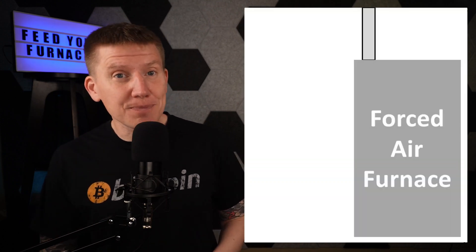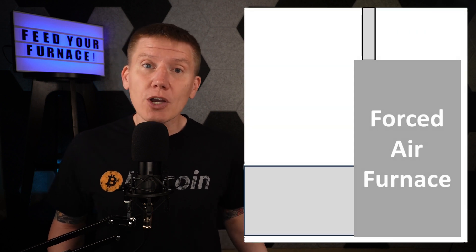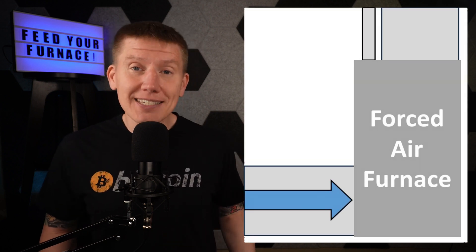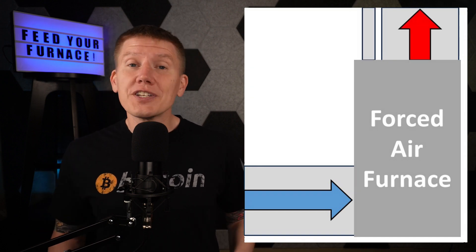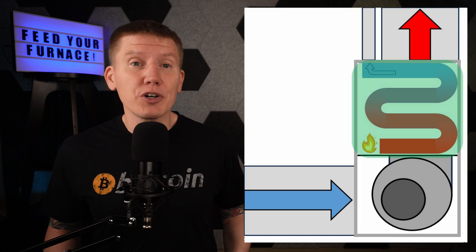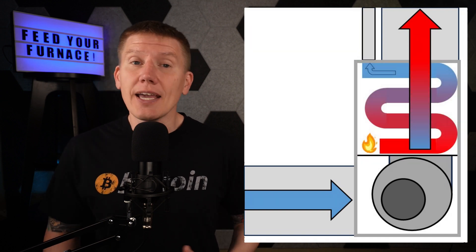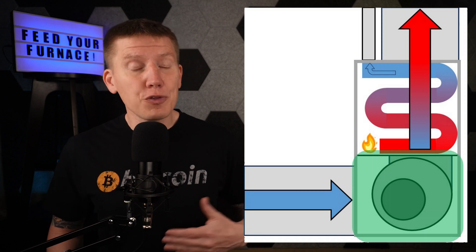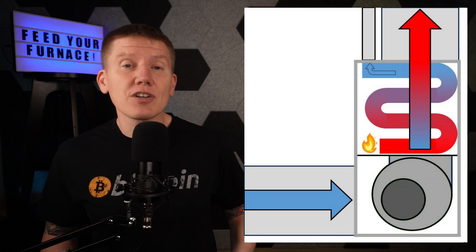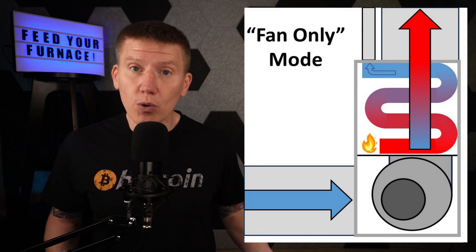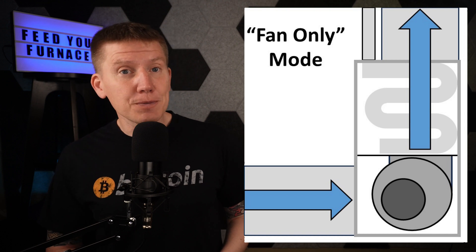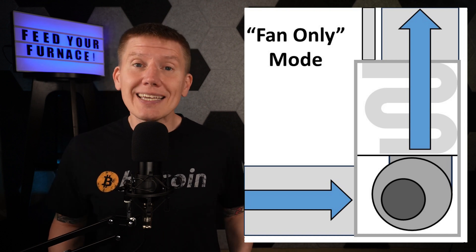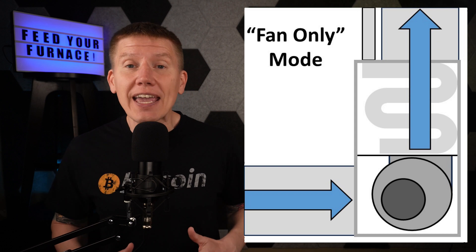For this setup, we'll start with an existing forced air furnace. This type of furnace has a return side plenum where the cold air enters the furnace and a supply side plenum where the heated air exits and flows to your house. The furnace consists of a burner and heat exchanger that work together to heat up the air, and a large fan which forces that air through the house. All furnaces are designed to run in a fan-only mode where the burner is off but the fan is turned on to circulate air through the house.